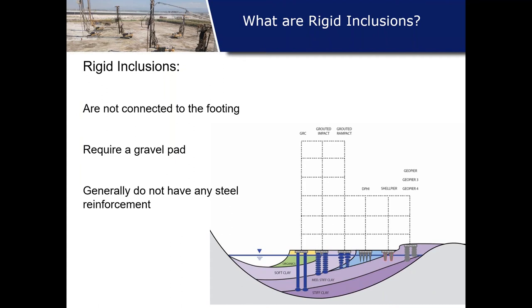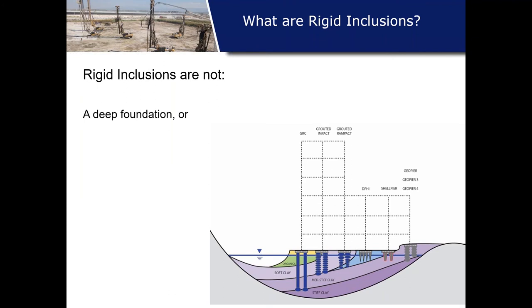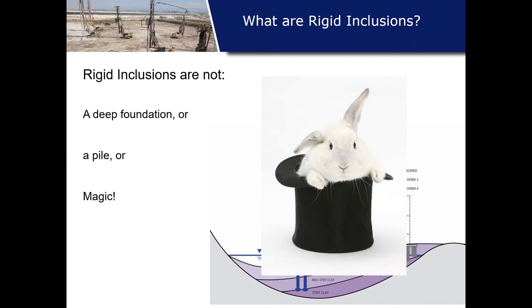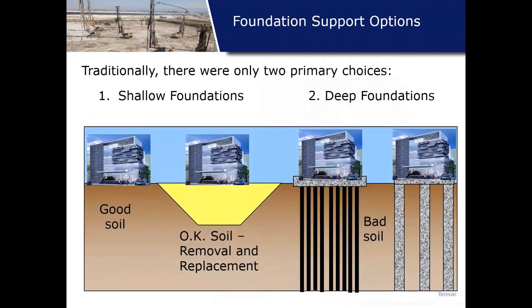A rigid inclusion is not a deep foundation because it's not connected to the foundation system. There are some similarities to deep foundations, and as a result we typically don't refer to them as piles — we refer to them as piers or rigid inclusions. They're not magic. These things have a strong basis in soil mechanics, as you'll see after this presentation.